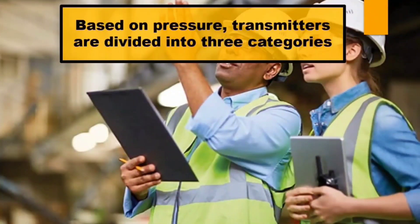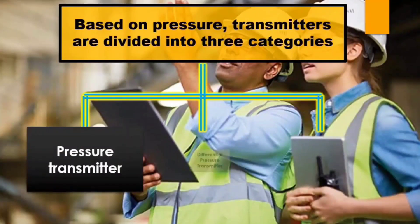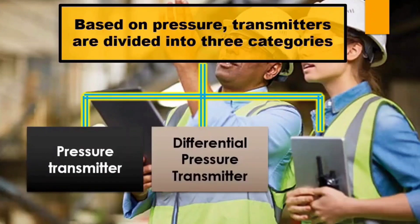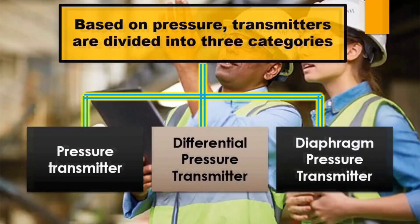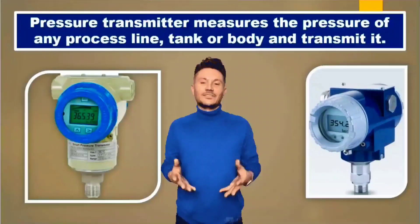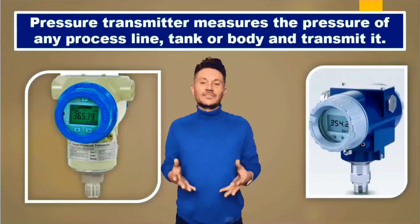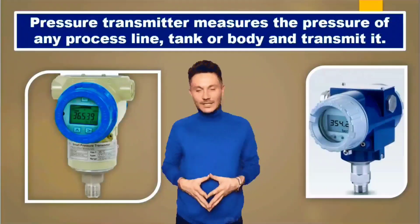Pressure transmitters are divided into three categories. And they are Pressure Transmitter, Differential Pressure Transmitter, and Diaphragm Transmitter. Pressure transmitters measure the pressure of a process line, tank, or body in industries and also transmit it.